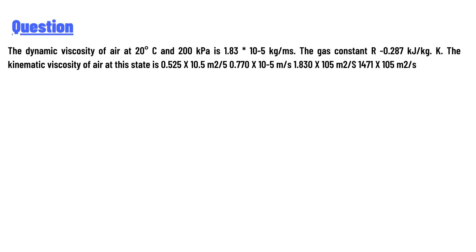centigrade and 200 kPa is 1.83 multiply by 10 raised power minus 5 kg/m·s. The gas constant R is 0.287 kJ/kg·K. The kinematic viscosity of air at this state is: 0.525 multiplied by 10^-5 m²/s, 5.070 multiplied by 10